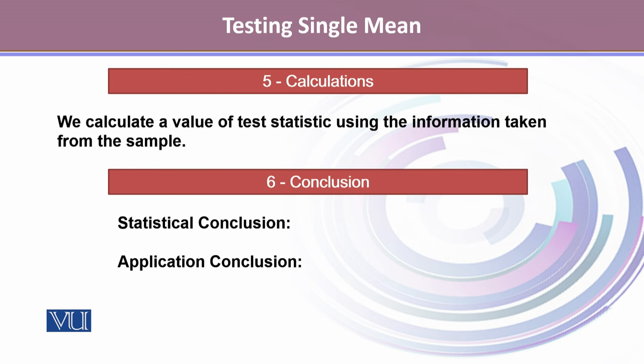Next, we calculate the value of the test statistic using information taken from the sample. Finally, we state the conclusion — both the statistical conclusion and the applied conclusion.